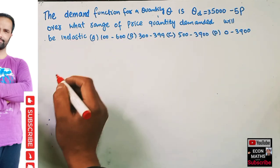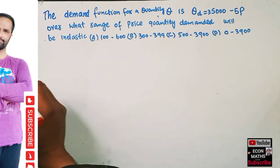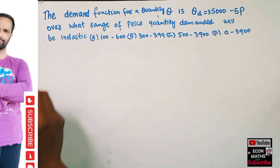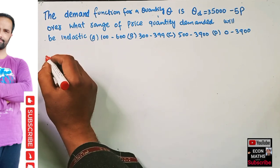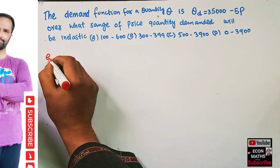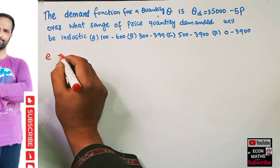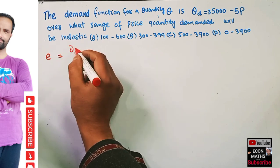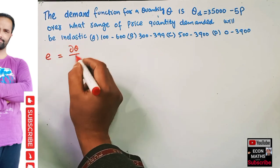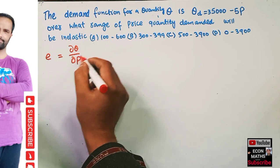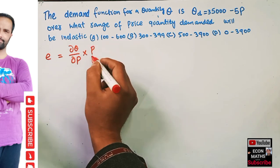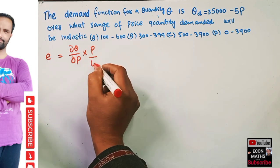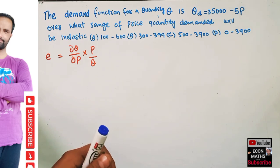We are being told quantity demanded should be inelastic. The price elasticity of demand function is written as: elasticity of demand equals dQ/dP multiplied by P upon Q. This is the price elasticity of demand formula.